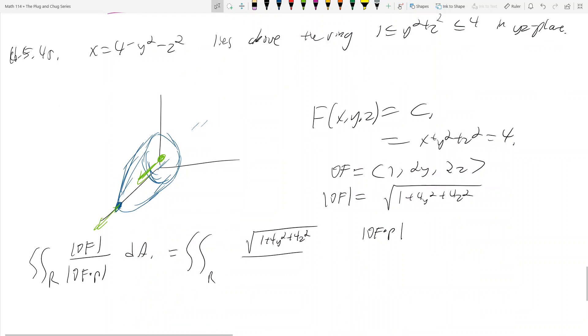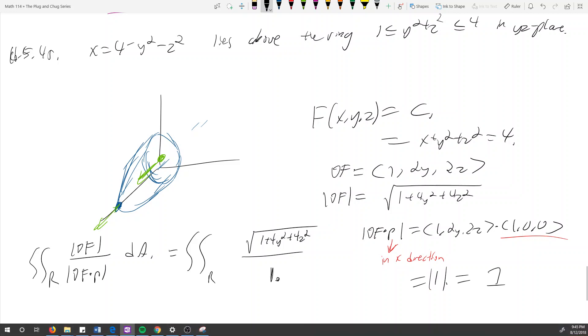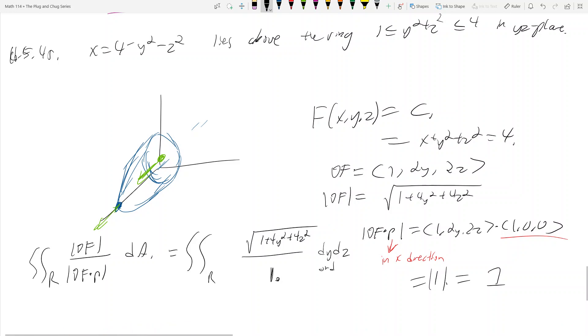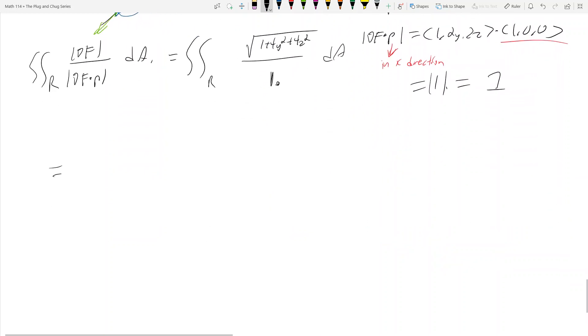So p then is going to be 1, 0, 0. Then del f dot p is 1, 2y, 2z dotted with 1, 0, 0 since p is in the x direction. And this dot product then is equal to 1. And the absolute value of it is also equal to 1. So that means I'm dividing by 1 on the bottom. And then for dA, I'm doing a combination of dy, dz, or dz, dy, depending on how I want to integrate it.